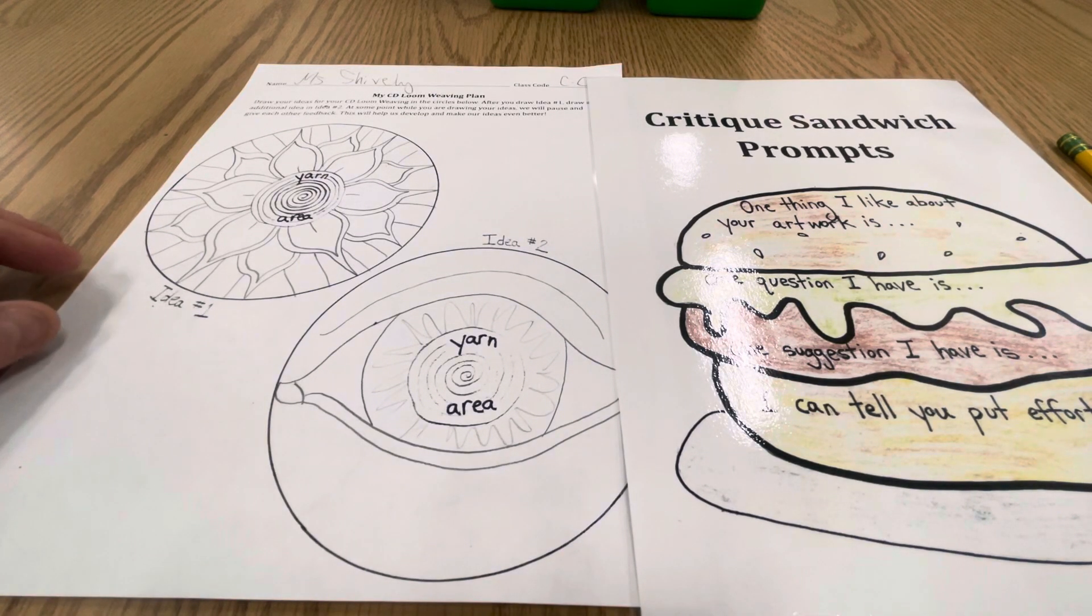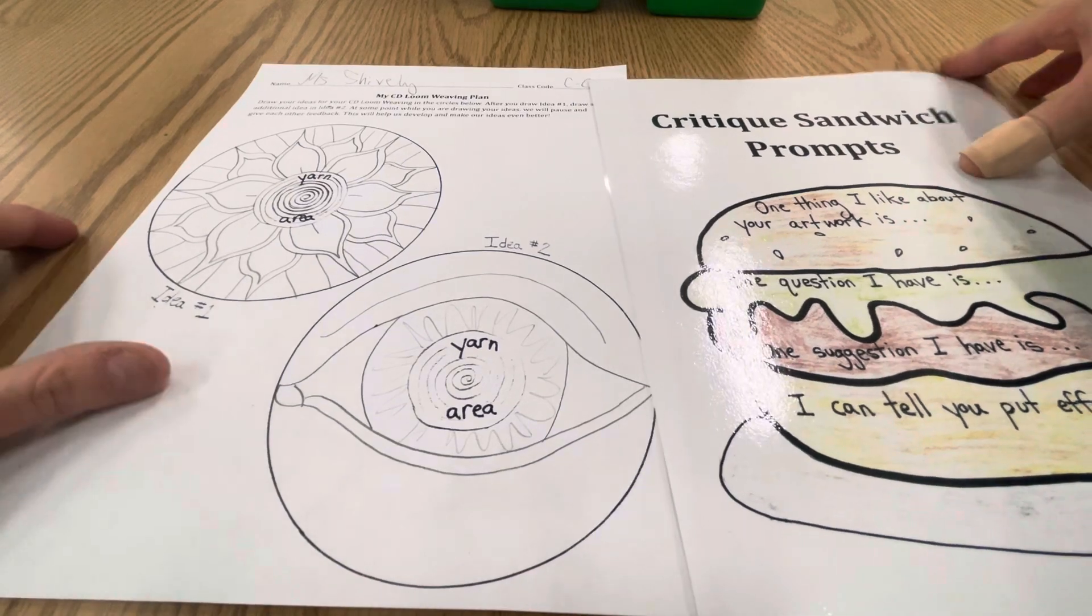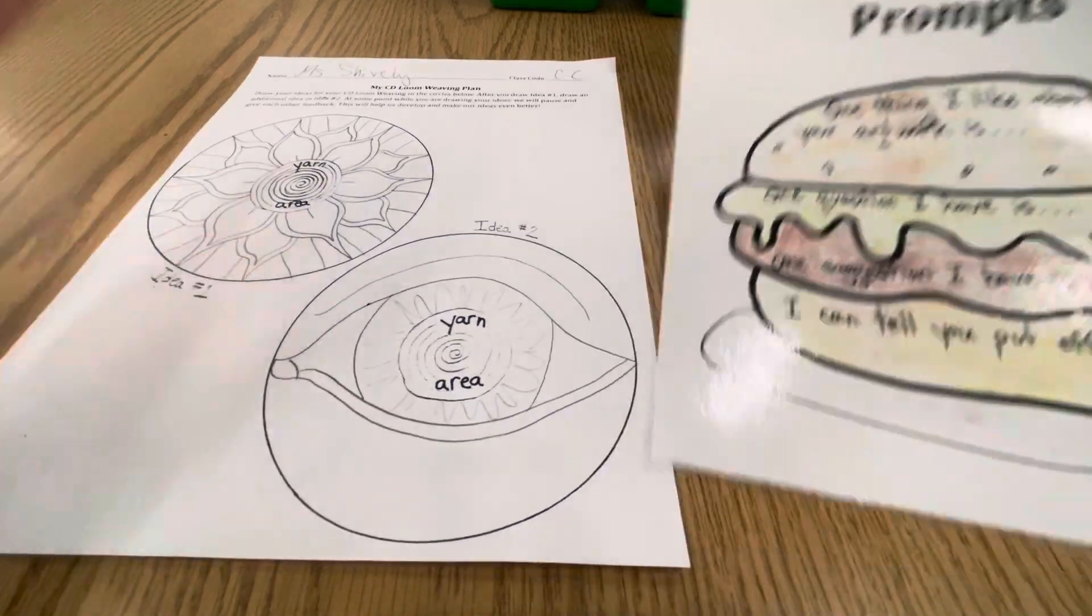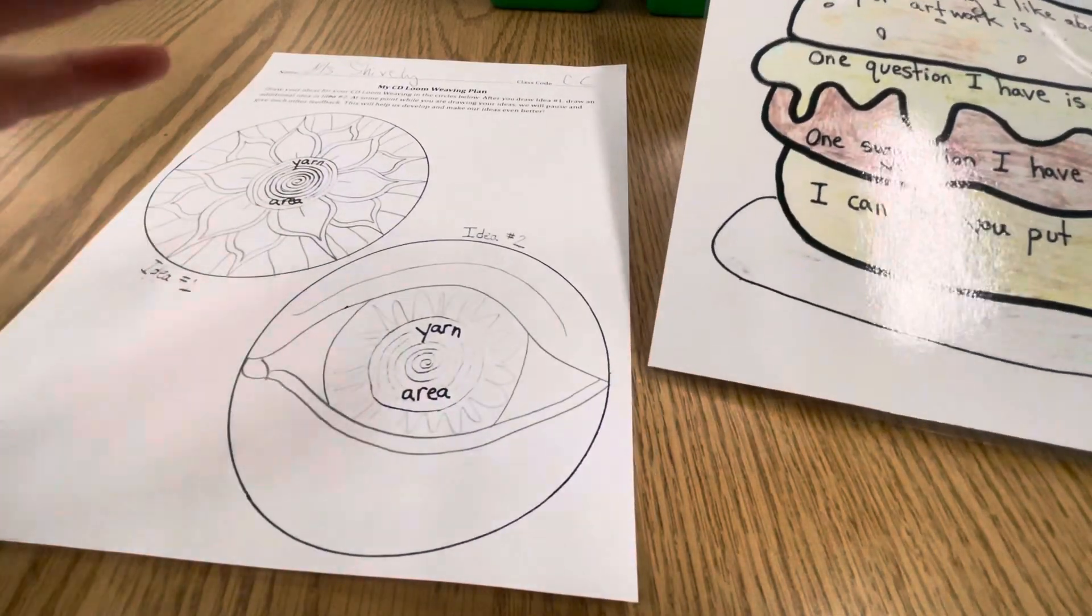All right artists, here's how you're going to do the critique sandwich prompts. You're going to work together with a partner and look at their artwork, what they have done so far.